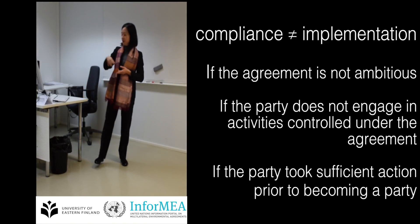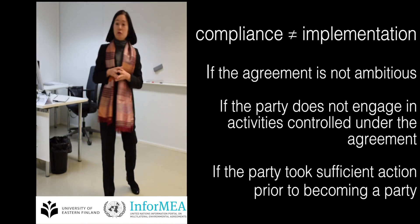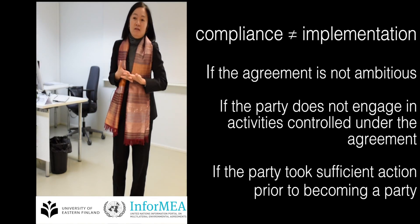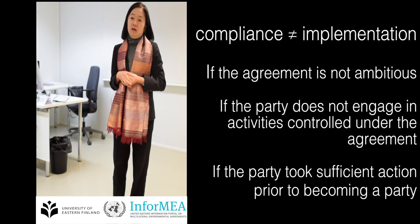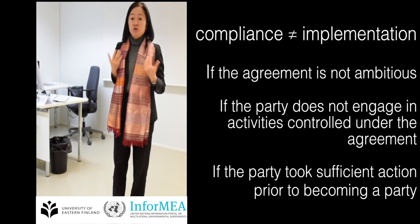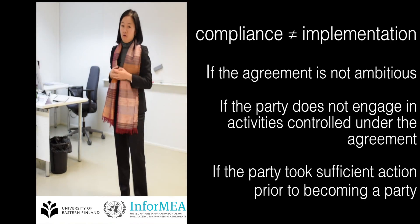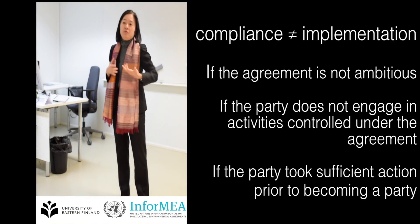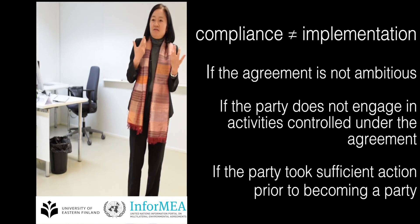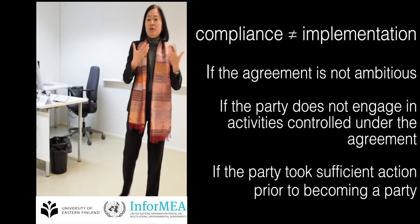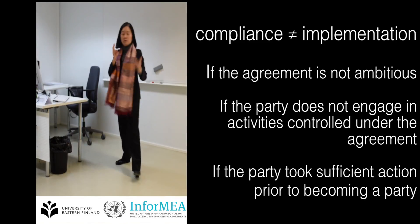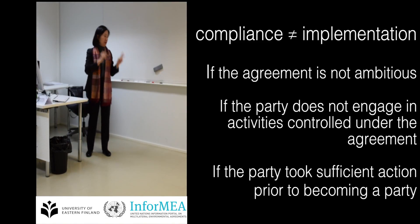The other reason, which also relates to lack of ambition, is if the party took sufficient action prior to becoming a party. Maybe the party got lucky, or especially in agreements where you have a phasing of action, it could be that the institutional measures taken — or actions taken by industry wanting to become a leader in that technology — were such that so much achievement was accomplished even before the obligation became legally effective. So those are some examples illustrating the relationship between implementation and compliance.